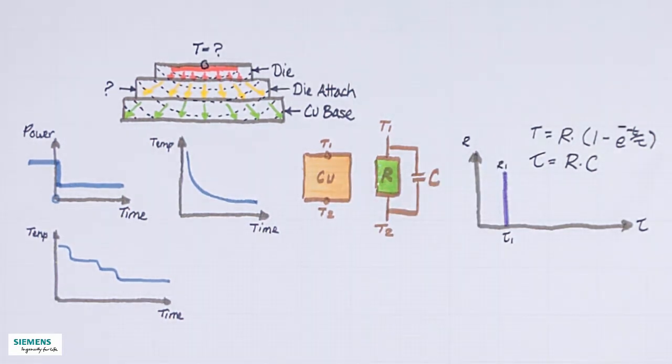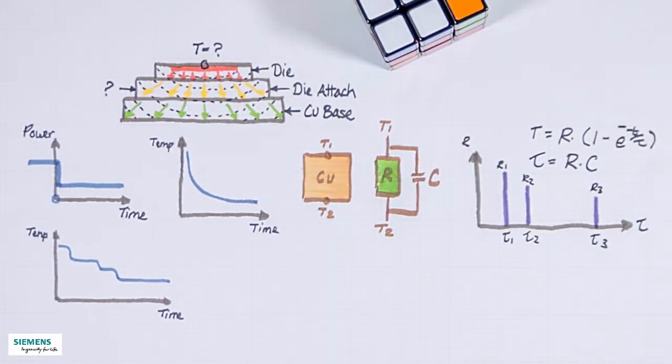If you have a more complex structure, the same applies, but you just have multiple stages. If we know all the tau values and all the R values, we know the thermal properties of the system.